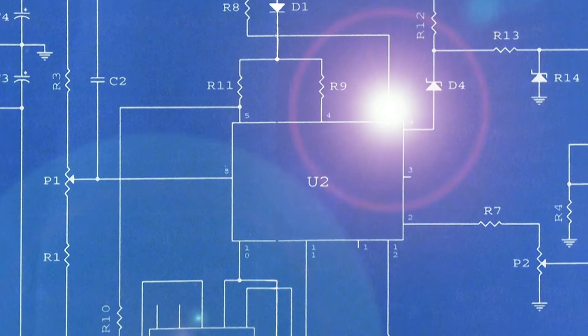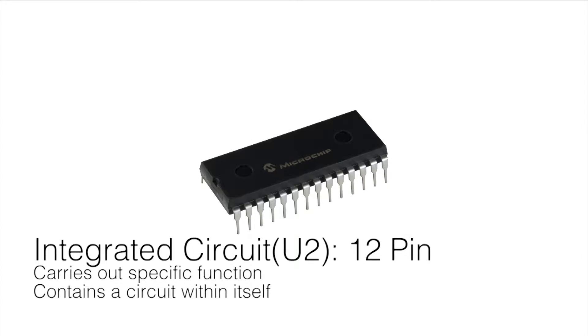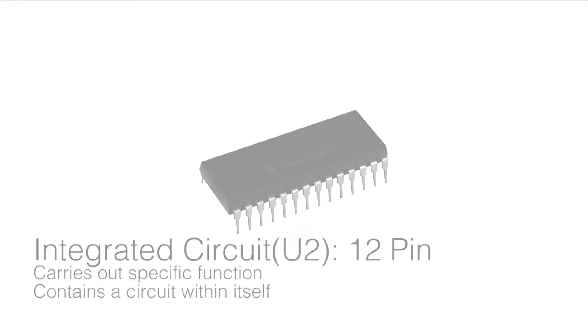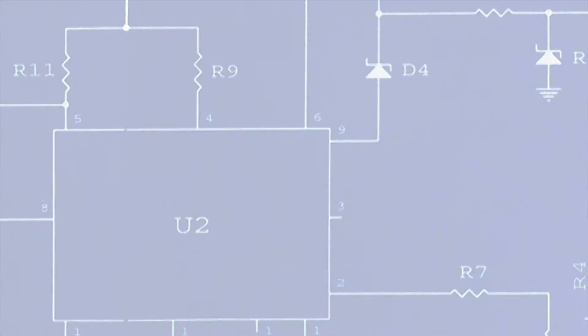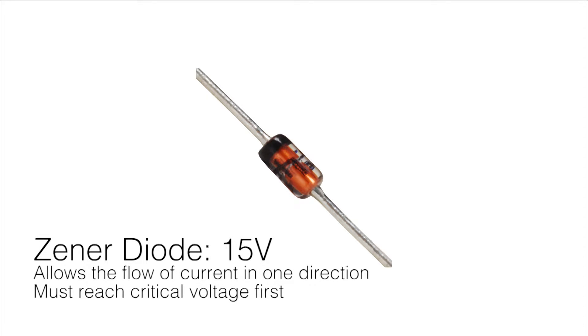Now we're entering the large space and domain of the integrated circuit. As we leave the integrated circuit, we now enter the Zener diode.